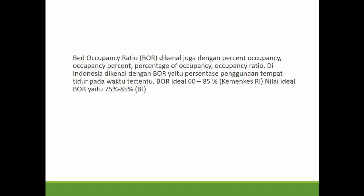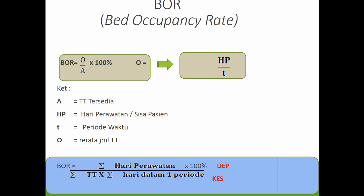Menurut Kemenkes, nilai ideal BOR adalah 60-85%, sedangkan menurut Barber Johnson adalah 75-85%. Rumus BOR menurut BG adalah BOR = O/A × 100%, di mana O = HP/T. A adalah tempat tidur tersedia, HP adalah hari perawatan, T kecil adalah periode waktu, dan O adalah rata-rata jumlah tempat tidur. Menurut Depkes: jumlah hari perawatan dibagi tempat tidur tersedia dikali jumlah hari dalam satu periode dikali 100%.